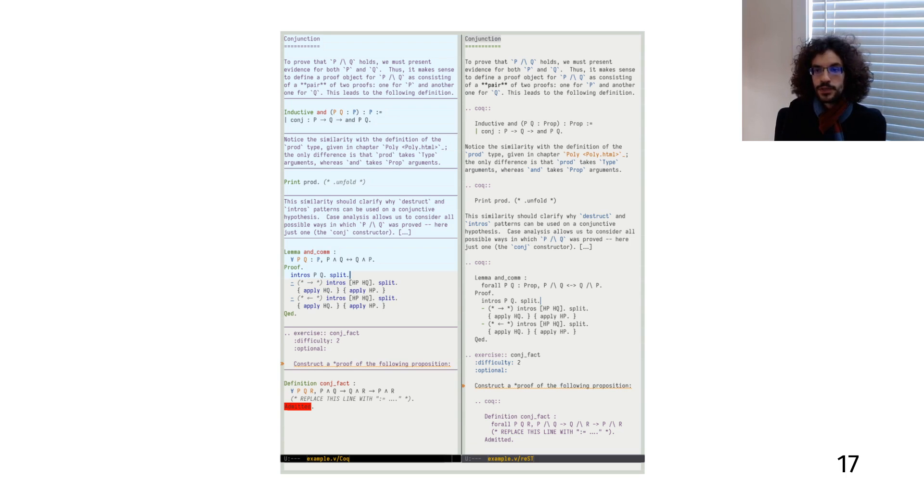Being able to go back and forth between reStructuredText and Coq means that Alectryon does not have to implement its own markup language for literate comments. It can just piggyback on the existing reStructuredText toolchain, which is very robust and used by a lot of people for all sorts of documents.